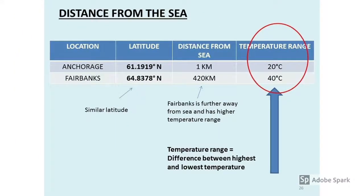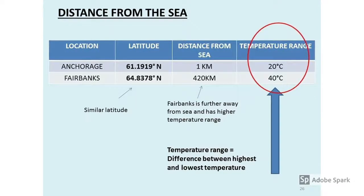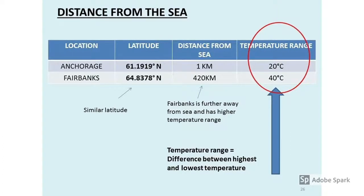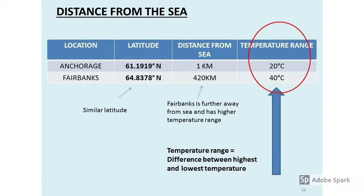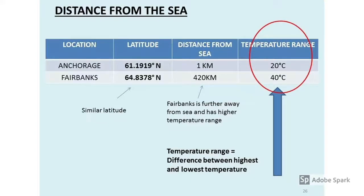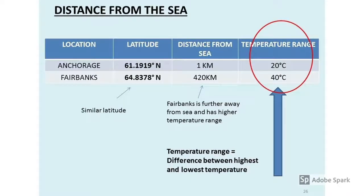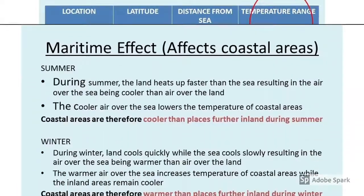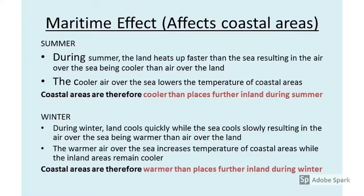We used two cities in Alaska — Anchorage and Fairbanks — as a comparison. Although latitude-wise they are about the same, distance from the sea affects the temperature range greatly. If you're near the sea, your temperature range will be much smaller: your summers will be cooler and your winters will be warmer. This is a very important concept.